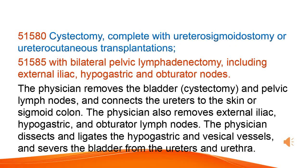Cystectomy, complete, with ureterosigmoidostomy or ureterocutaneous transplantation, with bilateral pelvic lymphadenectomy, including external iliac, hypogastric, and obturator nodes. The physician removes the bladder and pelvic lymph nodes, and connects the ureters to the skin or sigmoid colon.